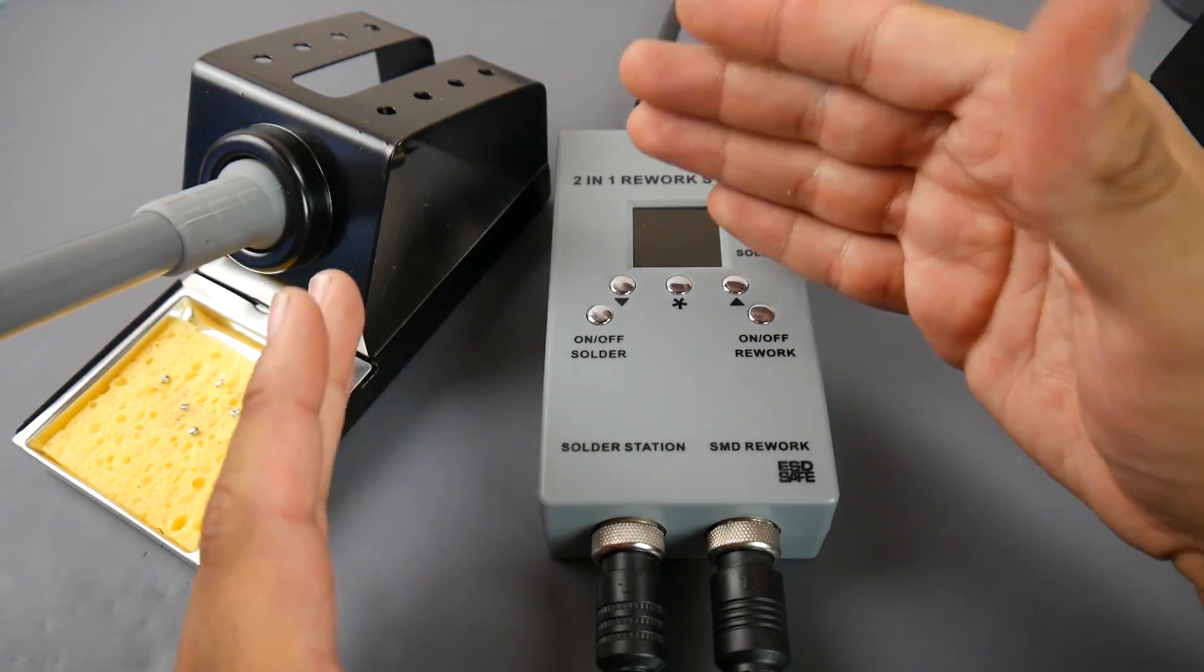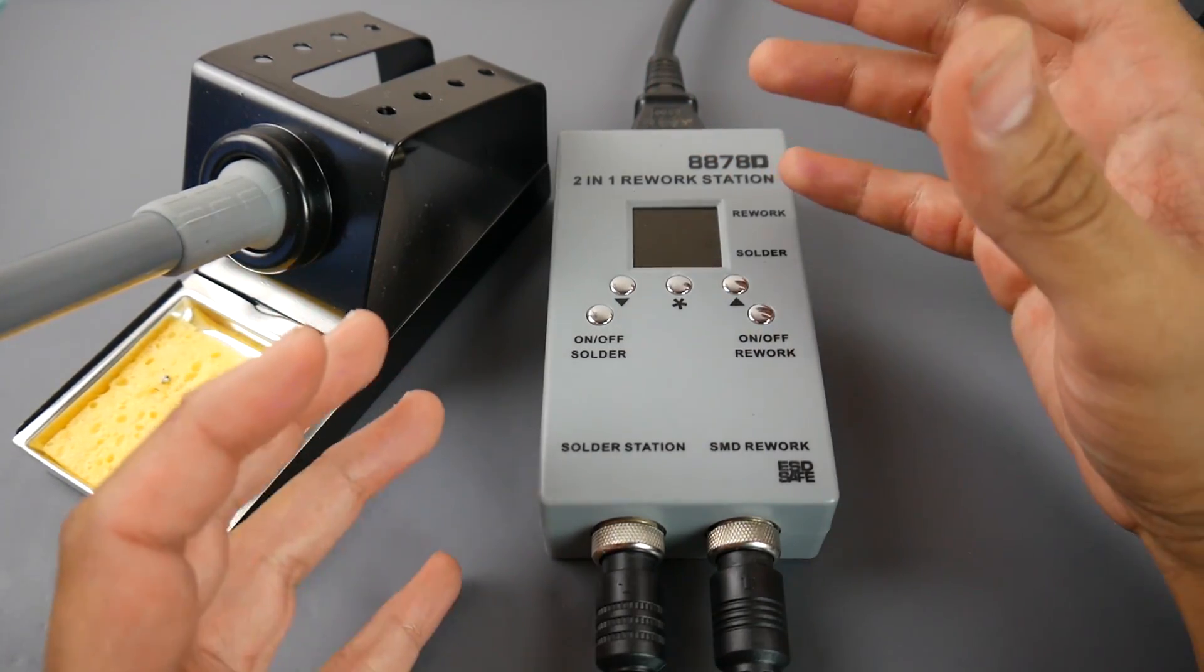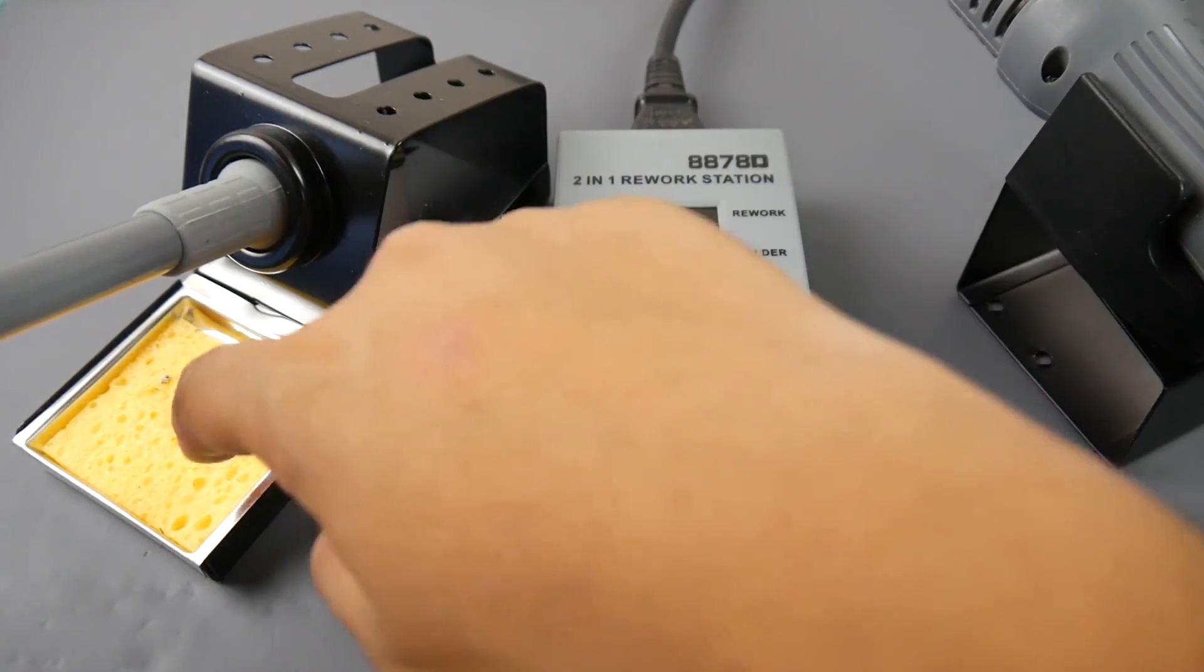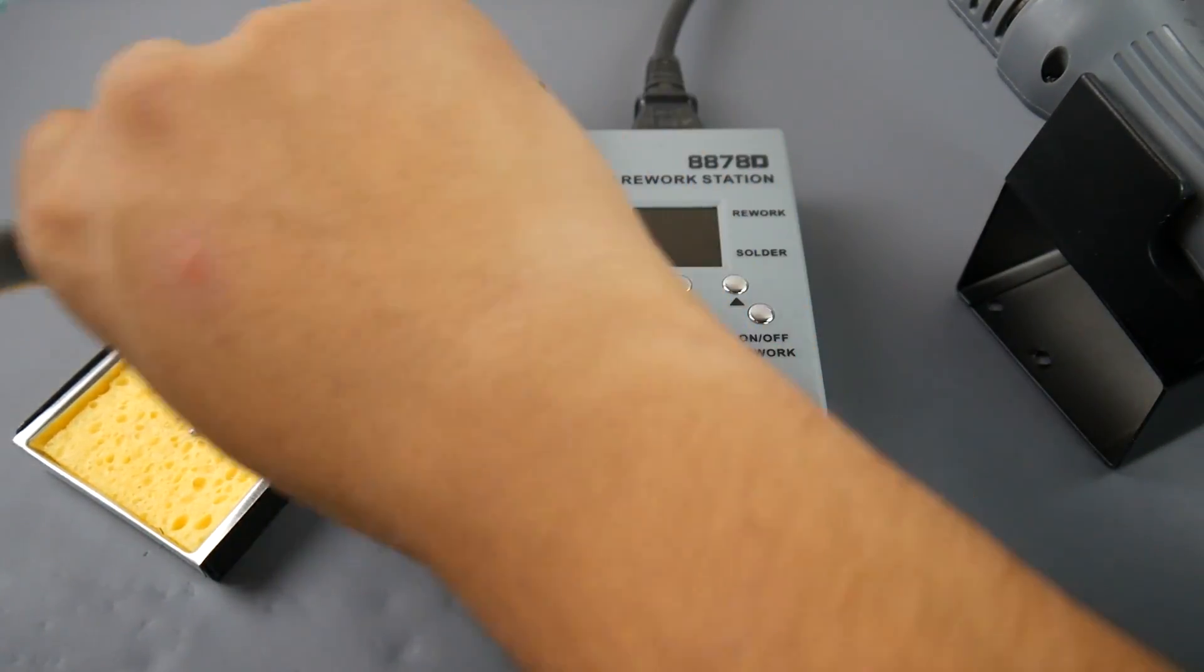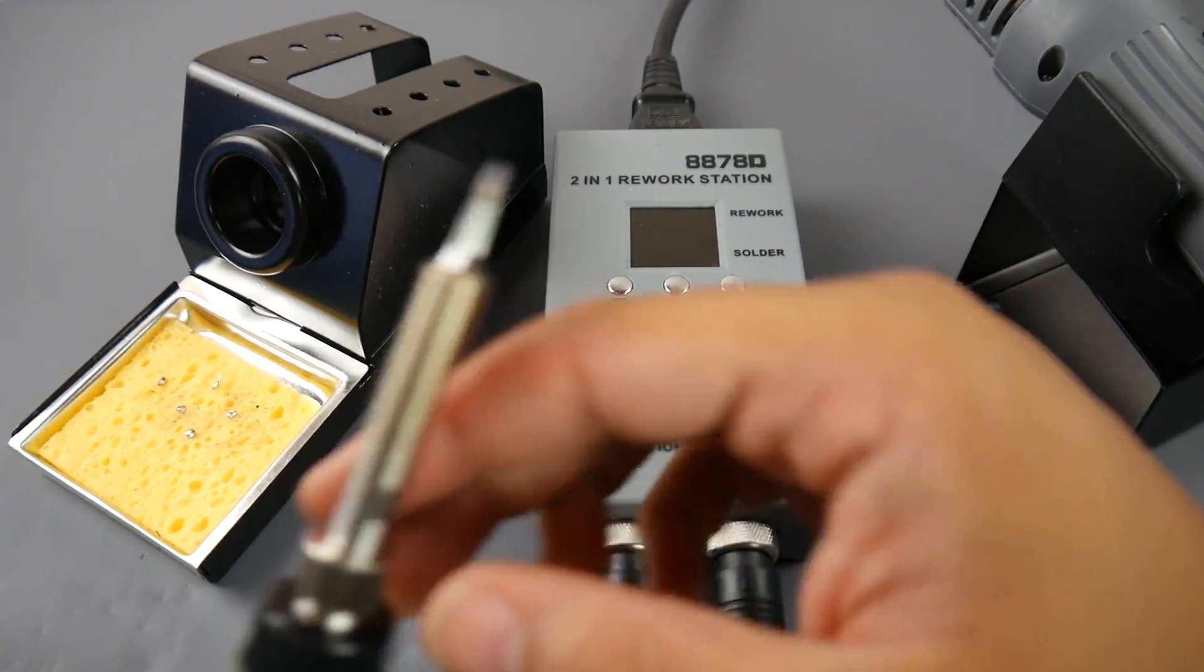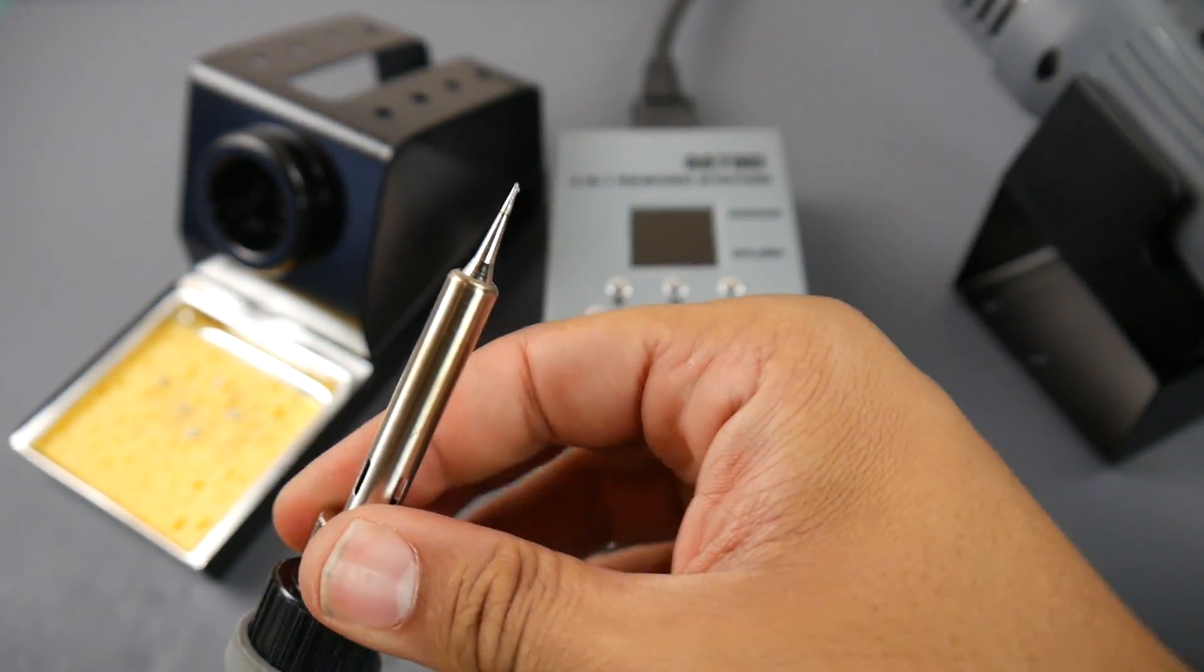What does this thing come with? You get the stands for both of them, one sponge, one soldering tip and it's the very thin tiny one. This is the complete universal sized one so it's not proprietary, you can replace these anytime you want which is really nice.